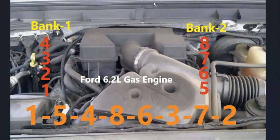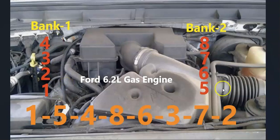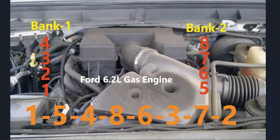Basically, the cylinder locations — when you open up the hood — on the left side, cylinders one, two, three, and four are on the passenger side. On the driver's side it's going to be five, six, seven, and eight.